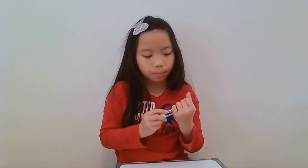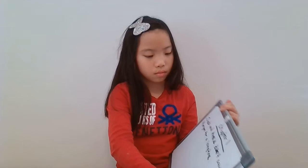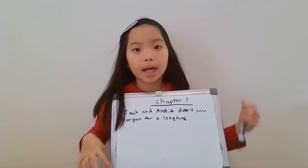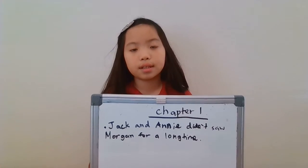So I want you guys to answer this question: Jack and Annie didn't see Morgan for a long time — because what? You guys find out what's the problem in the story. Why couldn't Morgan see Jack and Annie for a long time? That's this week's topic sentence.